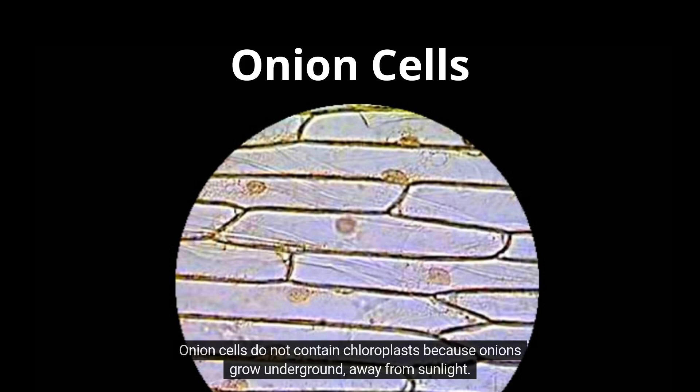Onion cells do not contain chloroplasts because onions grow underground, away from sunlight. Here is a slide kit that can help you learn with a microscope at home or school.